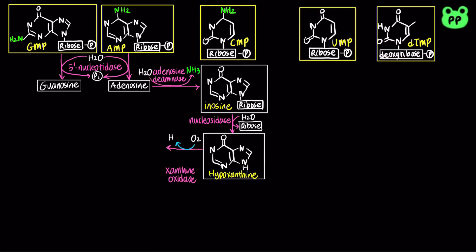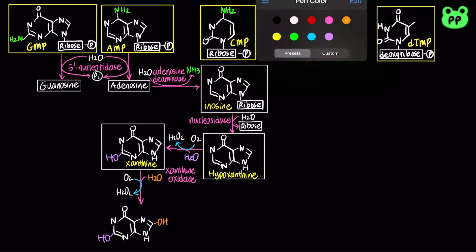Hypoxanthine in turn undergoes two oxidation reactions by xanthine oxidase to produce xanthine and uric acid, which are coupled to the reduction of oxygen to hydrogen peroxide.